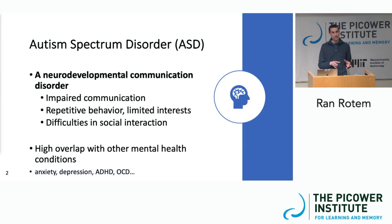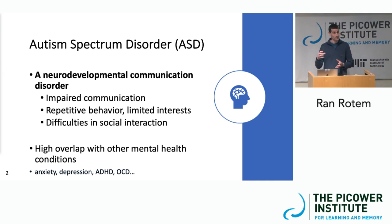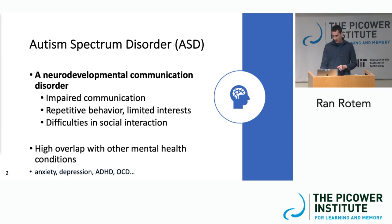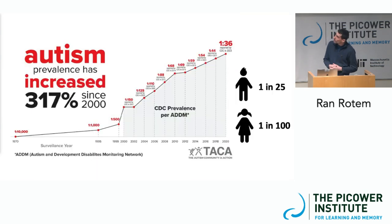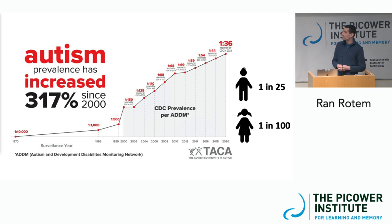Let me briefly start by talking about what autism is. It's a neurodevelopmental condition with three defining features that include impaired communication, repetitive behavior, and difficulties in social interaction. We like to use autism partly because there has been a substantial increase in the prevalence of autism in the United States and other countries. CDC data released a few months ago suggests that 4% of boys and 1% of girls are now diagnosed with autism in the United States, and the rate has been substantially increasing over the past two decades.